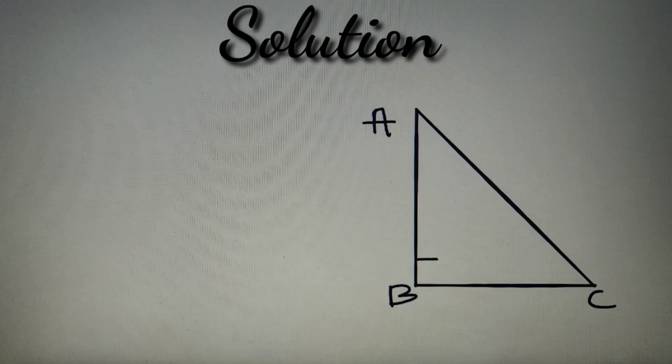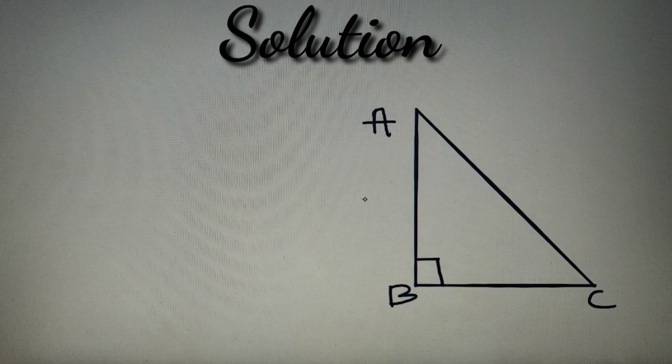It is given that the triangle is right angled at the vertex B. The length of side AB is provided as 7 and that of BC is provided as 24.